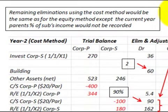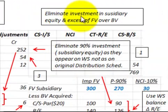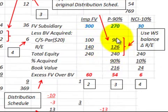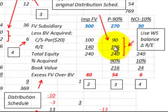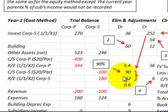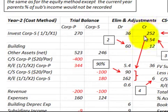The remaining eliminations using the cost method are the same as for the equity method, except that the current year parent's percent of the sub's income is not recorded. We eliminate the parent's portion of the investment against the subsidiary's equity. On the worksheet, we debit common stock at 90% — 90,000 dollars — and retained earnings at 90% — 162,000 dollars — then credit the investment in the subsidiary for 252,000 dollars.